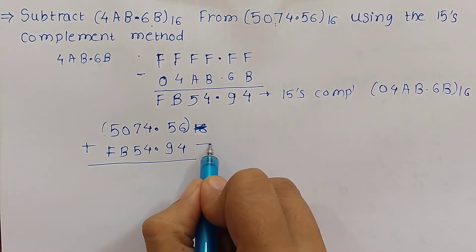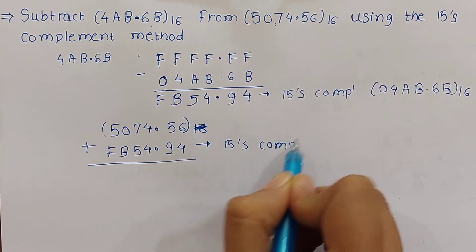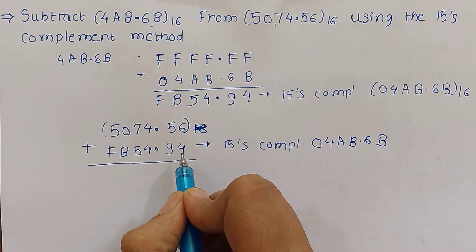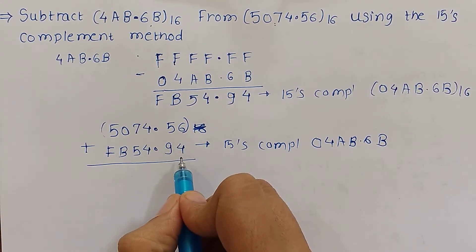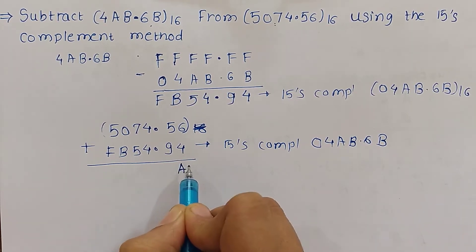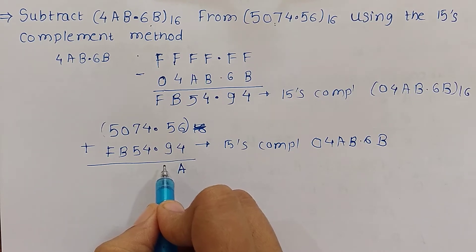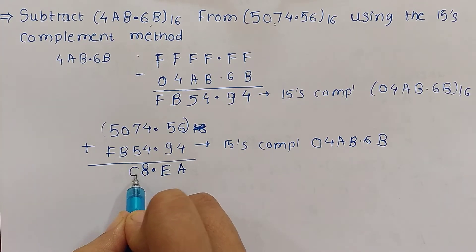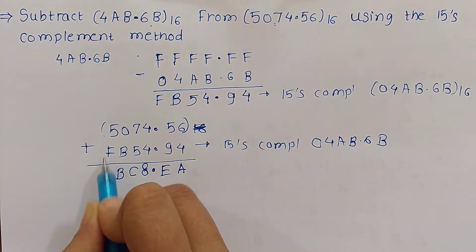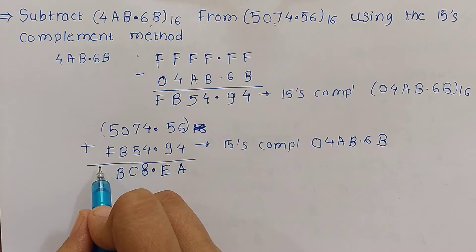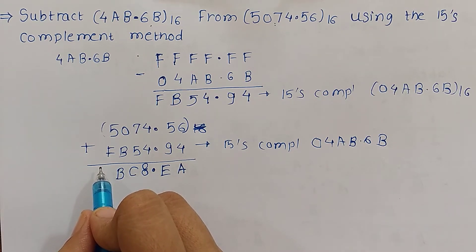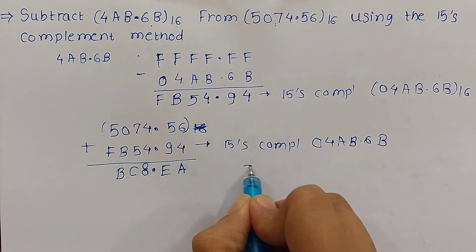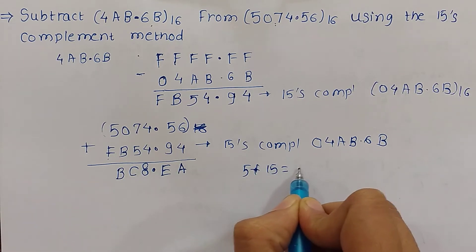This is the 15's complement of 04AB.06B. Now we perform the hexadecimal addition. 6 plus 4 is 10, which is A in hexadecimal. 5 plus 9 is 14, which is E in hexadecimal. 4 plus 4 is 8. 7 plus 5 is 12, which is C in hexadecimal. 0 plus B is B. F plus 5: F is 15 and 15 plus 5 is 20.